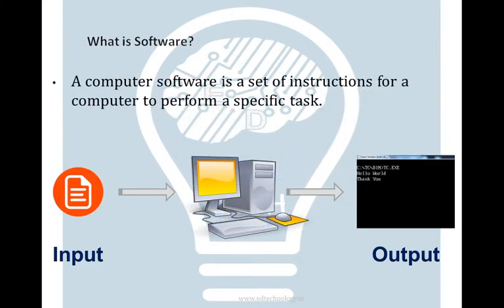Then there is software. Software is a computer program which is nothing but a set of instructions given to the computer to perform specific tasks. Software takes some input from the user or from the system, processes it through the system, and then gives an output. So this is the basic idea about what softwares and hardware are.